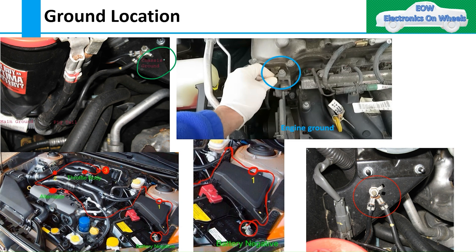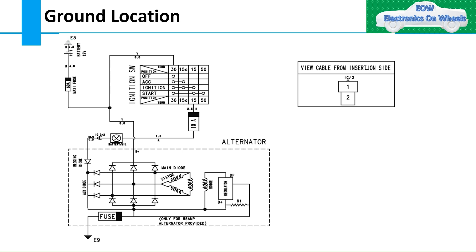You can see the different types of ground locations here — chassis ground, alternator ground, and battery negative terminals. When routing ground wires, ensure larger wires have shorter lengths to keep ohmic resistance low. Here are the different ground locations: engine ground, battery negative, and chassis ground. Now in the wiring diagram, E3 represents the battery negative terminal.